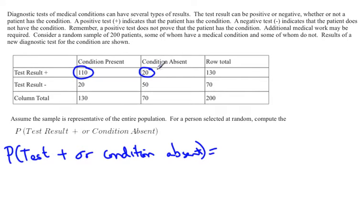Then there are 20 people who have the condition absent and 50 people that have the condition absent with a test result negative. We don't want to count these 20 people twice. So what we can just do is count the 110 plus the 20, which gives us 130, plus the 50, which gives us 180. So we get 180 out of 200.